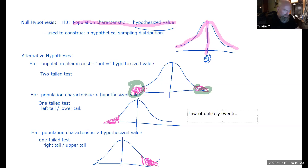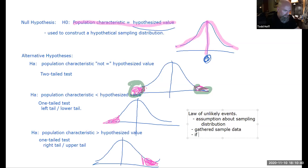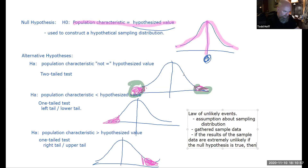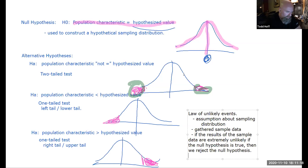If we have extremely unlikely events occur — we made an assumption about the sampling distribution, then drew a sample — and if the results of that sample data are extremely unlikely given the null hypothesis is true, then we reject the null hypothesis. If we assumed the null was true but got a result extremely unlikely under that assumption, our only conclusion is that the null hypothesis was wrong.